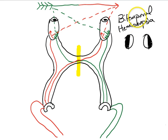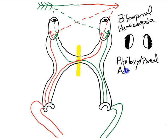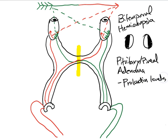If you ever see bitemporal hemianopsia, the two things on your differential are a pituitary or pineal adenoma. If it's a pituitary adenoma, you want to check prolactin levels. If it's a pineal tumor, the boards usually go for something like menstrual cycle irregularities, precocious puberty, or McCune-Albright syndrome. They usually like to default straight to problems like that. So that is bitemporal hemianopsia — lesion of the optic chiasm.